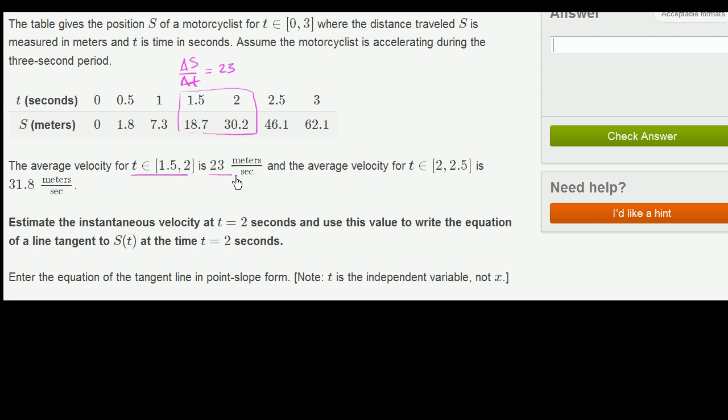And then they tell us the average velocity for t between 2 and 2.5. So change in our distance over change in time is 31.8 meters per second.